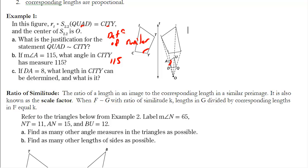And then finally, part C, it says DA is 8. What length in city can be determined and what is it? Well, DA corresponds with TY. So we're going to be finding this side right here. Well, if I did a size change of 2.2, that means that this side length has to be 2.2 times as big as this one. So if I take 8 times 2.2, I will have that value, which would be 17.6.